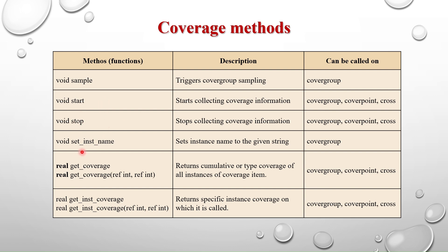The next method is set_ins_name, which is used to set the instance name. It sets the instance name to a given string. When the cover group has multiple instances, we can name each instance by passing a string. It can be called on the cover group. For example, if the cover group has three instances c1, c2, c3, we can name each instance as cover group 1, cover group 2, cover group 3 using set_ins_name.